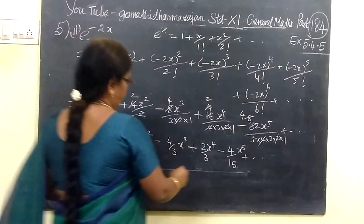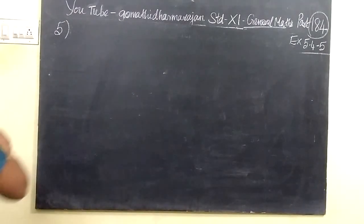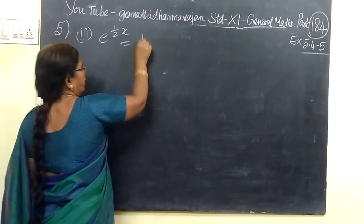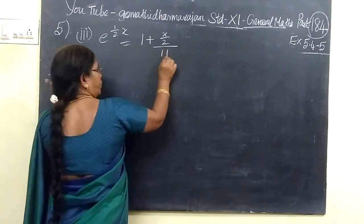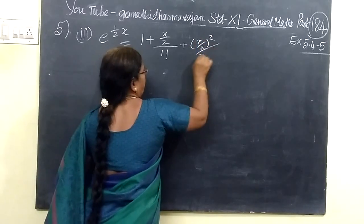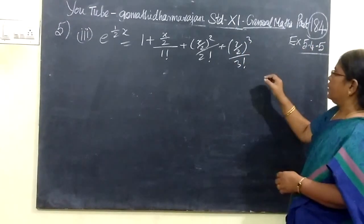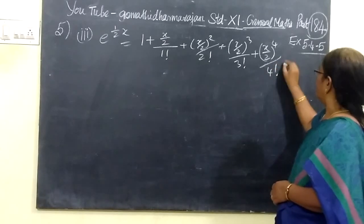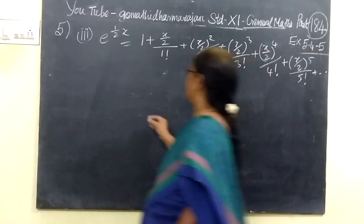So, the only problem. Then next we will find e to the power x by 2. So, e to the power x by 2. So, for that we write 1 plus x by 2 by factorial 1, then x by 2 squared by factorial 2, then x by 2 cubed by factorial 3, then x by 2 to the fourth by factorial 4, then x by 2 to the fifth by factorial 5. These terms now.